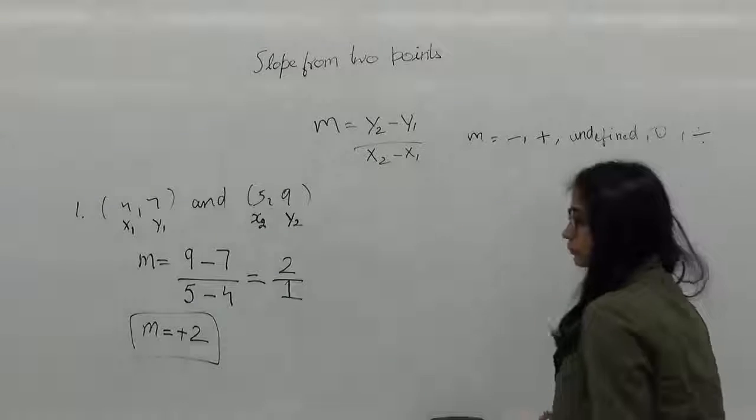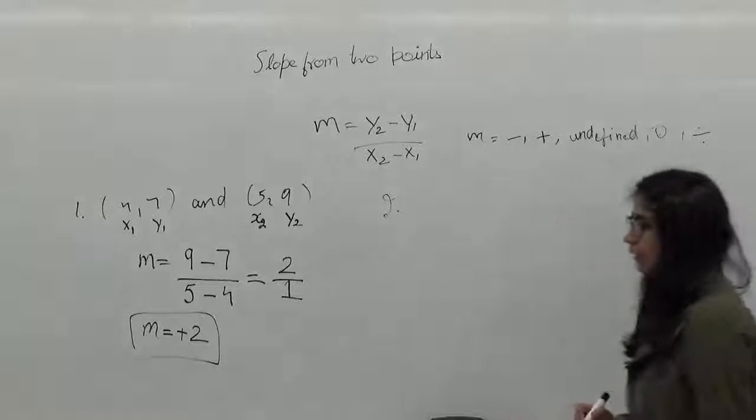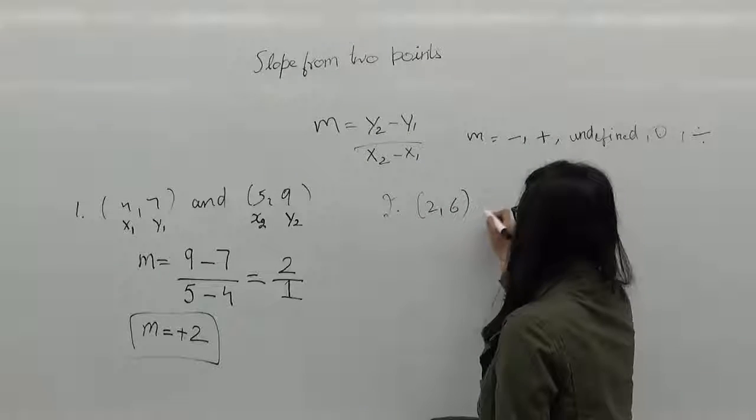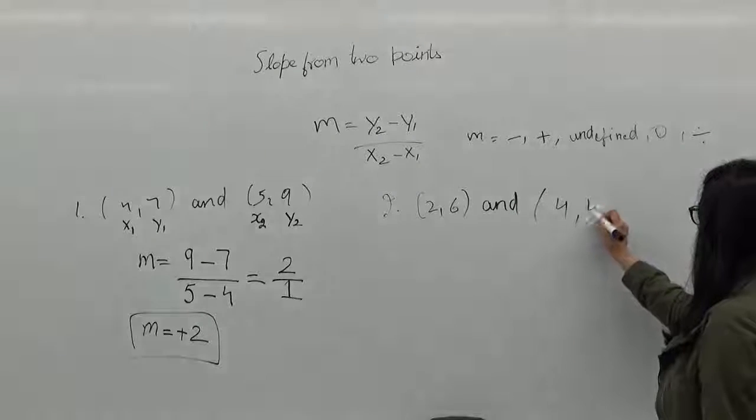Let's do one more question. Find the slope of the line passing through points (2,6) and (4,4).